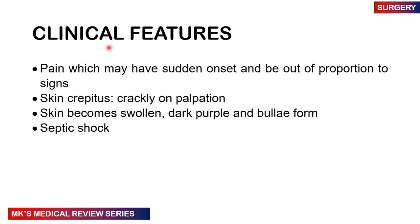Clinical features of gas gangrene include pain which is out of proportion to the signs. On the skin there may be crepitations when you palpate — a crackling sound like someone walking on leaves. The skin often becomes swollen and dark purple, with bullae sometimes forming. Sometimes the patient may go into septic shock.